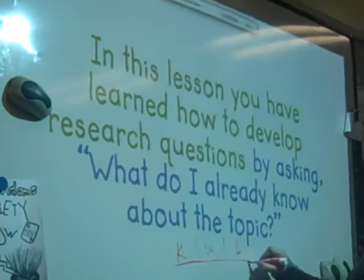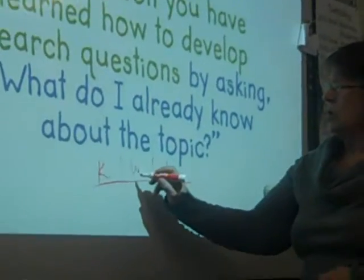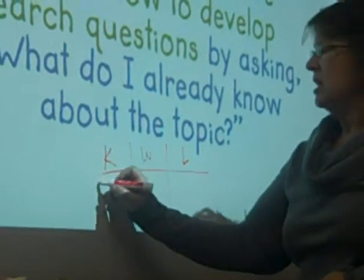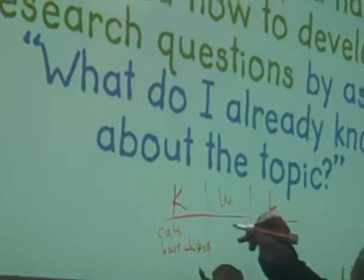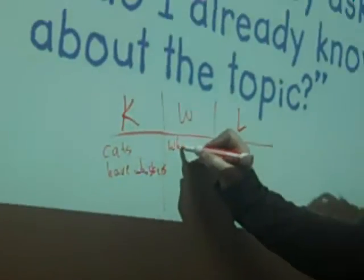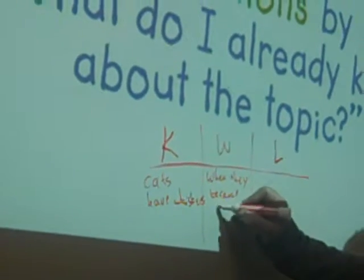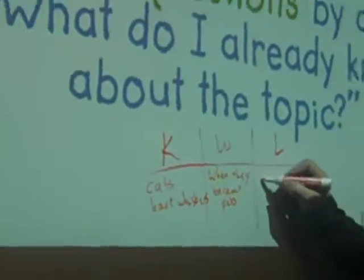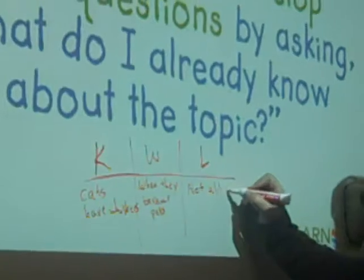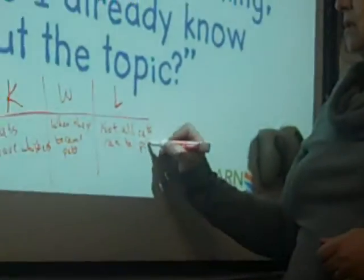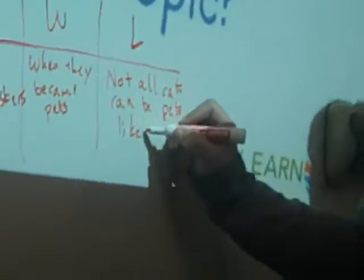Sometimes teachers set it up as a chart with the words: what I know, what I want to learn, what I've learned — and then you fill in the information. For example: I know that cats have whiskers. I want to know when they became pets. I learned not all cats can be pets, like tigers and the big cats.